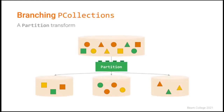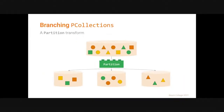Let's see in a diagram how the Partition transform works. We have an input collection where the elements are colored shapes, and we want to split it into three P-collections each containing shapes of a specific type. The partitioning function checks the shape type and returns a number identifying the output P-collection that the element belongs to: zero for squares, one for circles, or two for triangles.